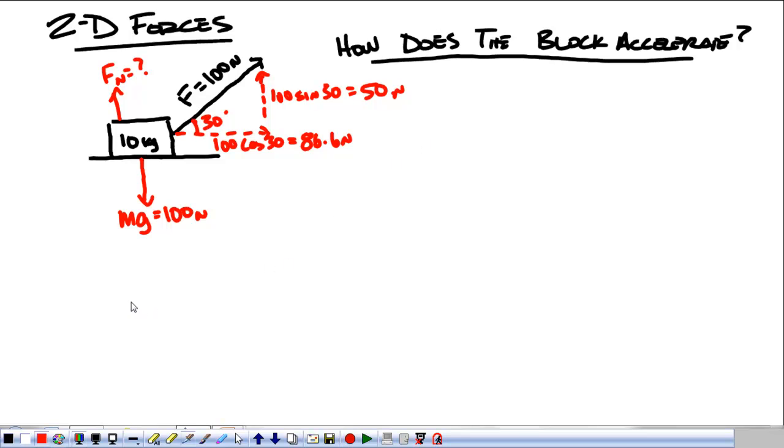So, let's redraw our mass. And instead of drawing that angle thing, let's just draw all the components. So I have my force in the x direction, 86.6 newtons.